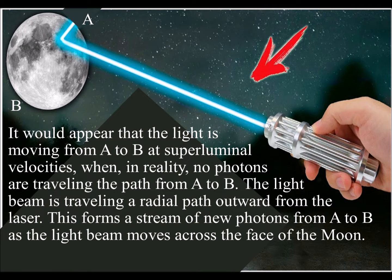We live in a universe where it is possible, just by turning a laser half a degree, a person can sweep a laser beam of light from one side of the moon to the other, with apparent speed faster than the speed of light.